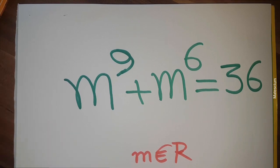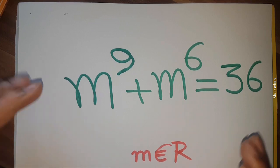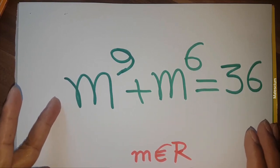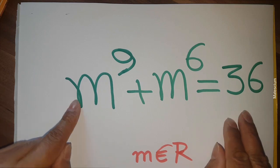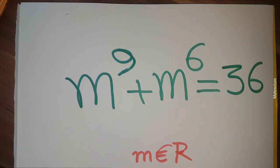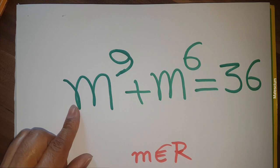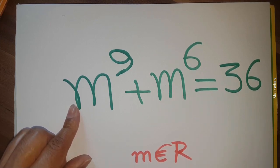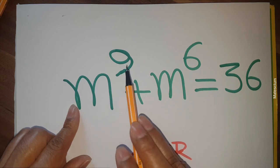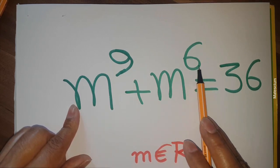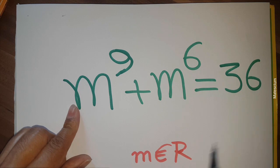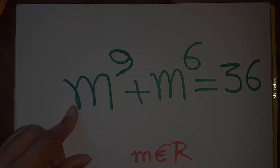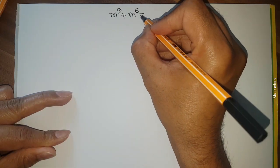Hello, my math lovers! I found an interesting math problem online that people solve in a very complex way. Interestingly, I solved this mathematical statement three different ways, which are the simplest ones. The problem is: m to the power 9 plus m to the power 6 equals 36, with the condition that m must be a real number.